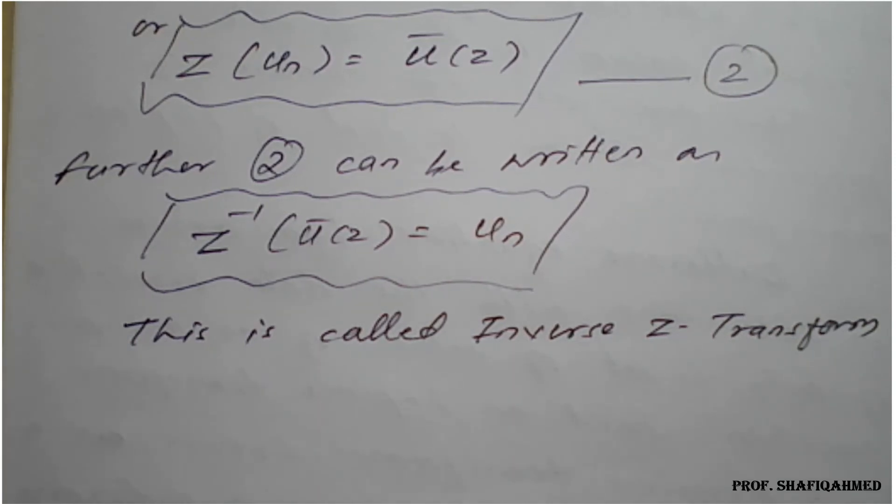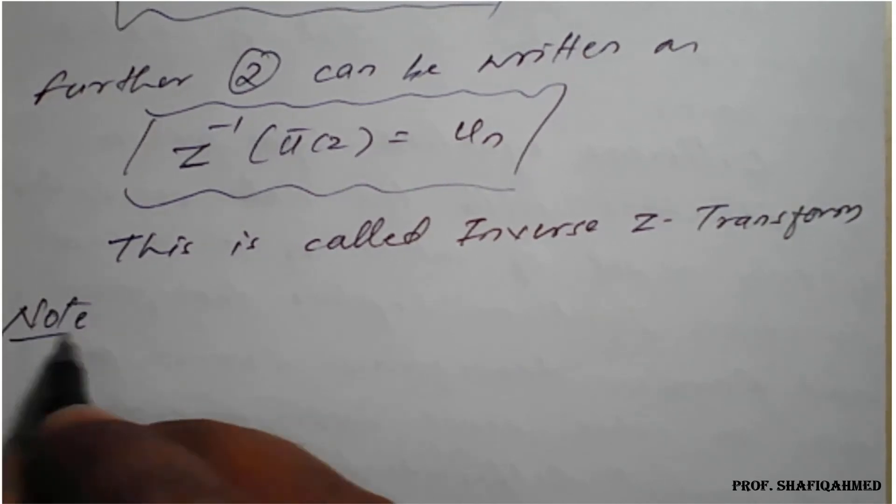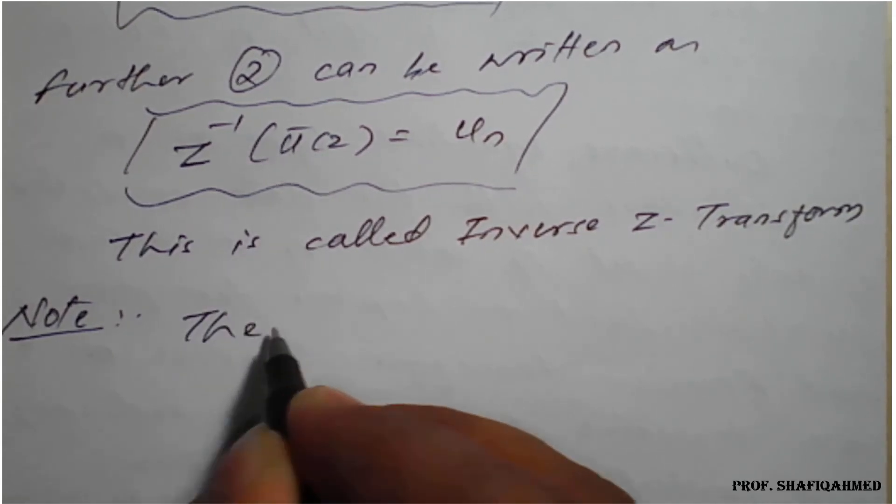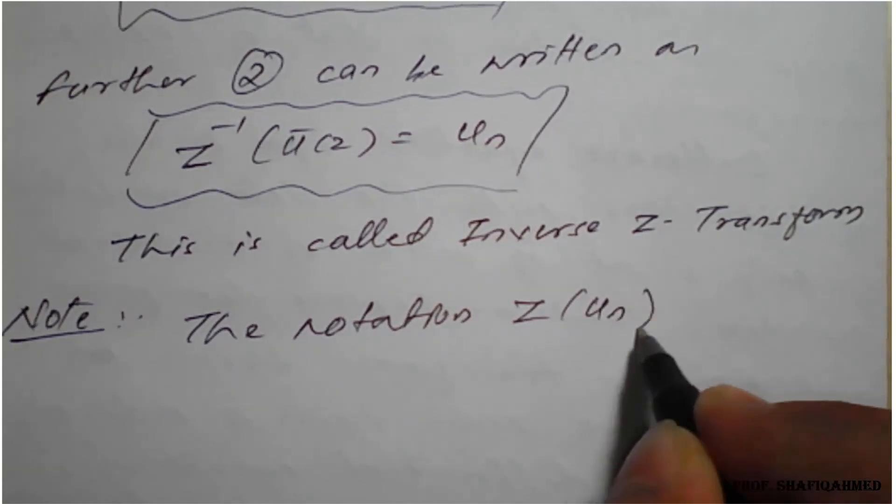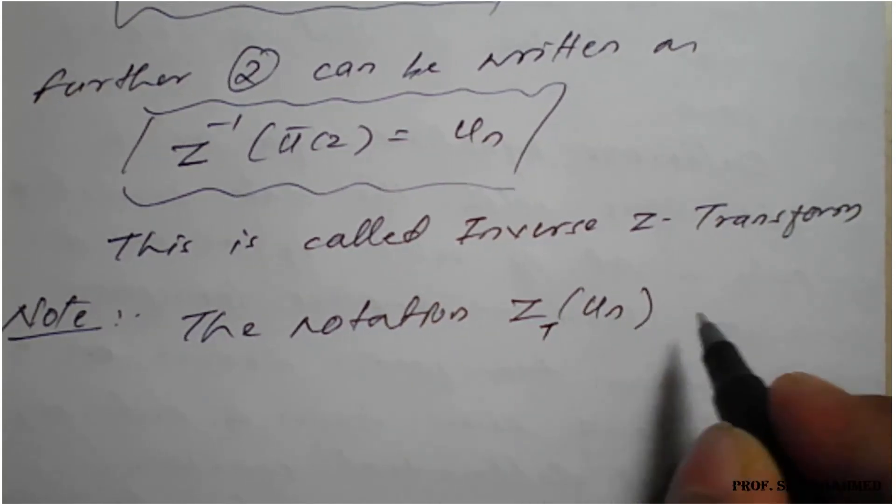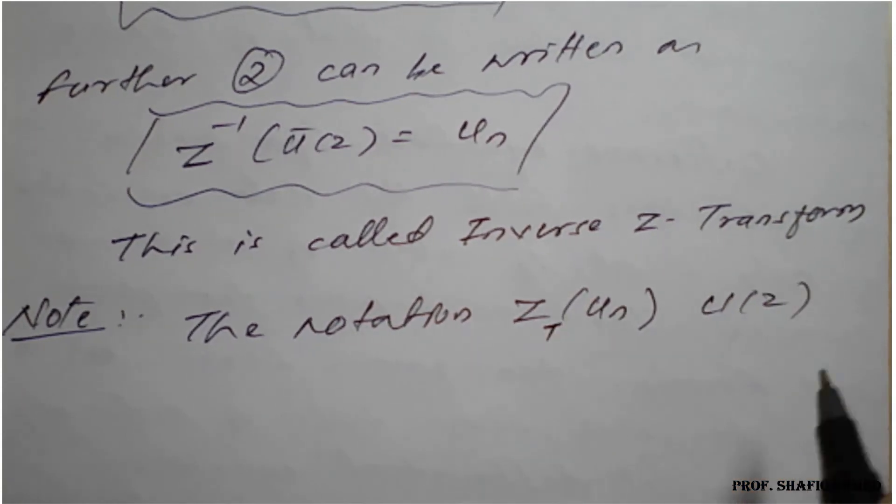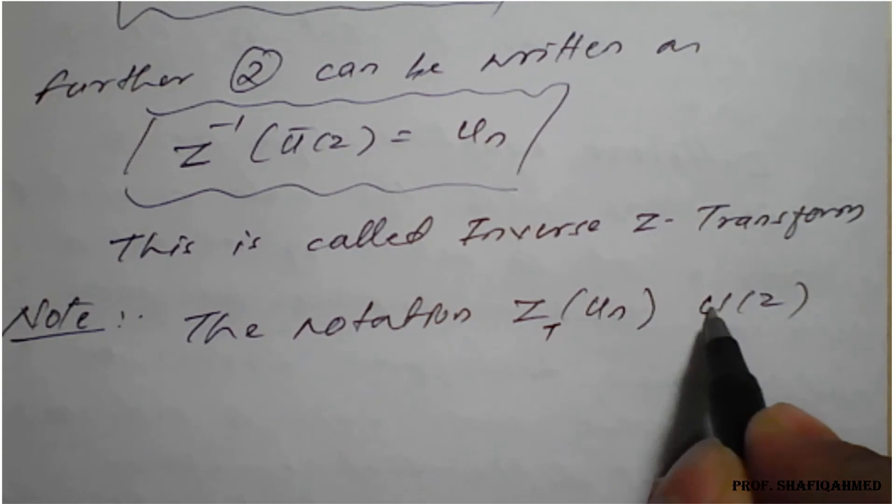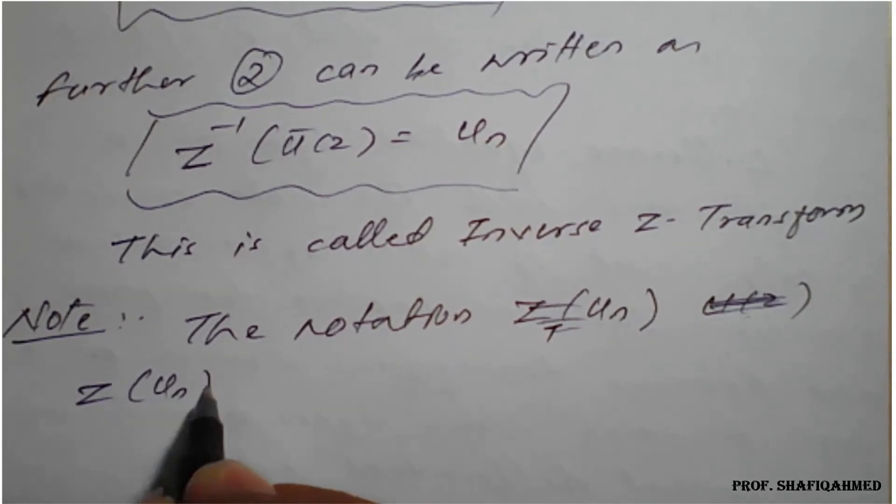Sometimes here, notations are also going to be used according to different authors, so I will take in the form of a note. The notation: Z{u_n}, or sometimes they are going to write Z_t, like that also. Z_t{u_n} is denoted as u(z) also. Means here Z_t{u_n}—the notation Z{u_n} or Z_t{u_n}.